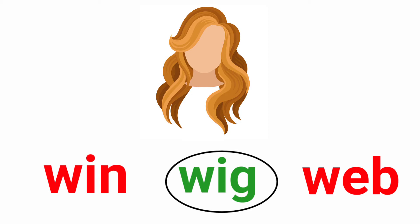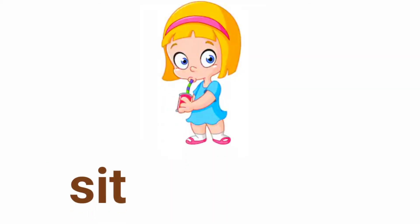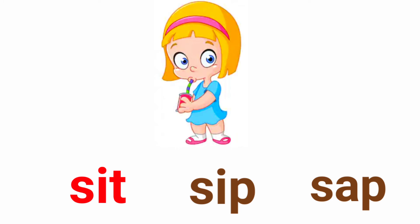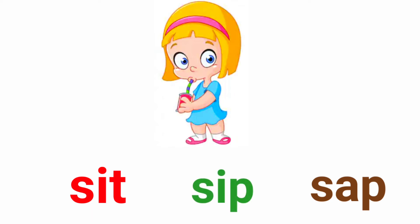Then move to the next one. Sit, sip, sap. Let's circle the suitable word. Sit — is this word suitable for this picture? Yes, correct. So we need to circle the word sit.